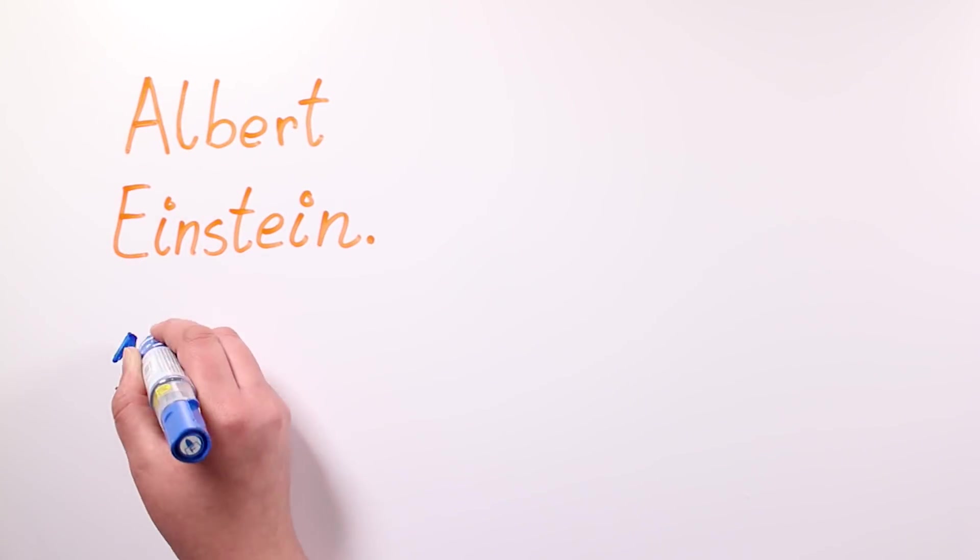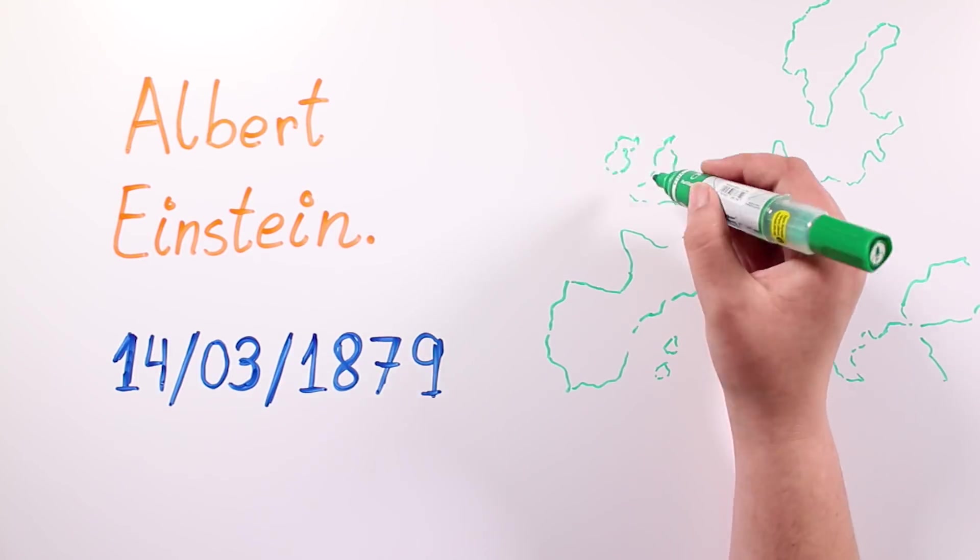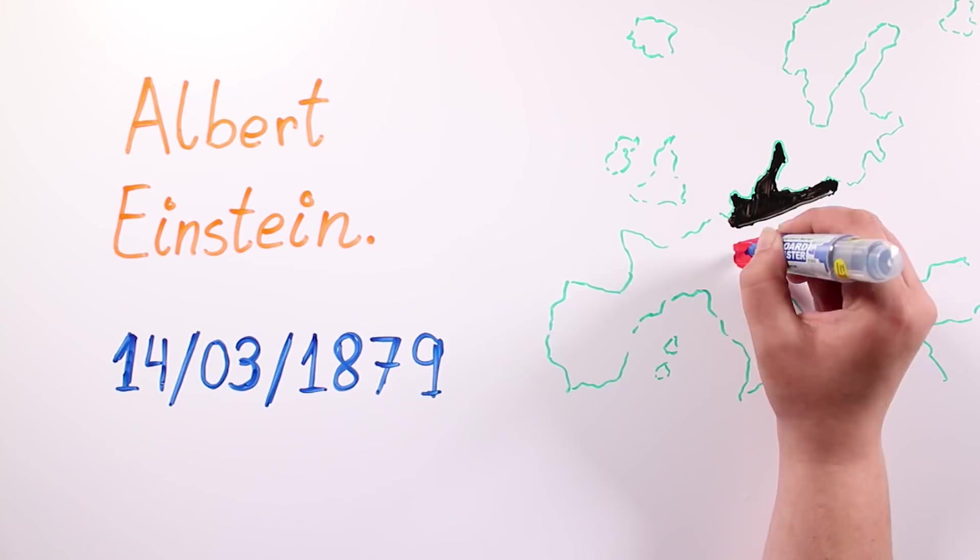Albert Einstein, the most popular physicist in the 20th century, was born on March 14th, 1879, in the city of Ulm, in the old German Empire.